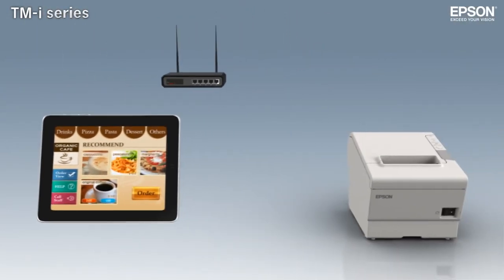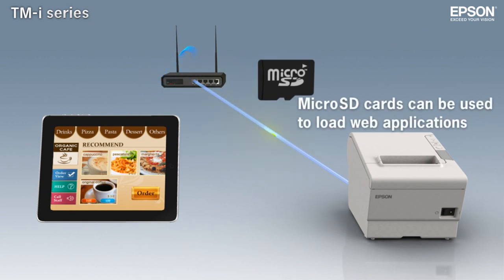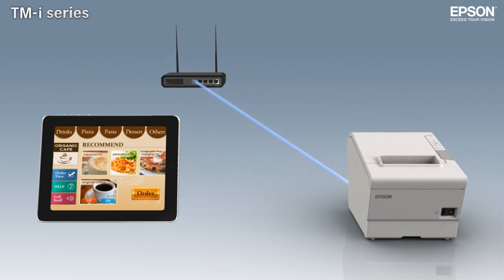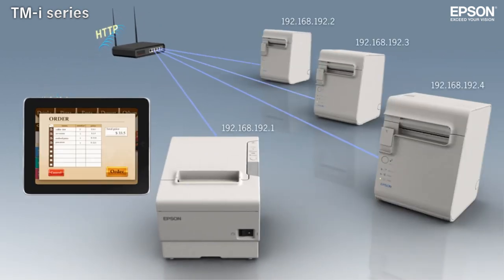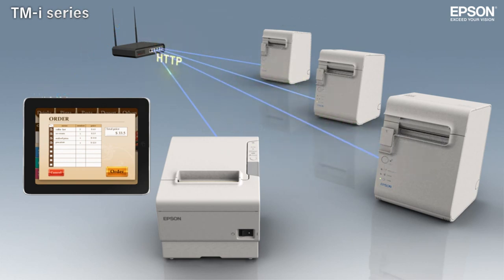With their built-in web server and PHP support, TMI series printers are a low-cost way to add web application printing power to small networks. A single TMI printer can be set up as a hub and used to control conventional POS printers on the same network. They're also ideal for food service order entry and kitchen printout systems.